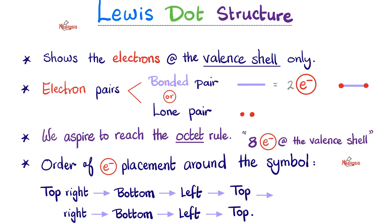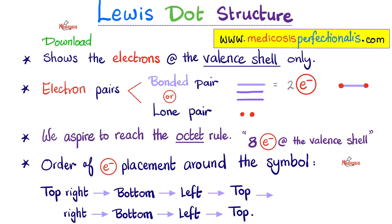There are two types of electron pairs: bonded pairs, which are part of a bond, and lone pairs, which make no bonds. A dash represents a covalent bond sharing 2 electrons. A double bond has 4 electrons shared; a triple bond has 6 electrons shared. Each element aspires to reach 8 electrons in the valence shell — the octet rule. Exceptions exist and we'll discuss them shortly.